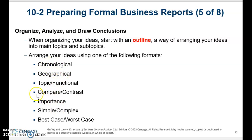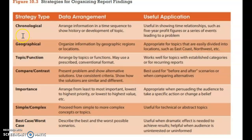There are many ways to arrange your ideas: you can do compare and contrast, topic/functional, chronological, or best case/worst case. We're going to look at figure 10.3, which lists strategies for organizing report findings. It shows when you would use chronological — for time relationships such as five-year profit figures or a series of events leading to a problem. Compare and contrast is best used for before-and-after scenarios or when comparing alternatives. I want you to look over that and see when it's appropriate to use each type of strategy.